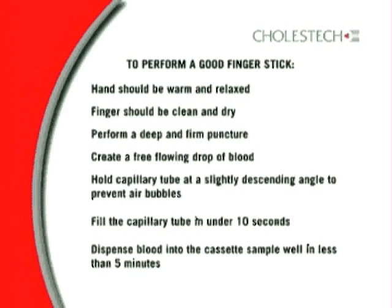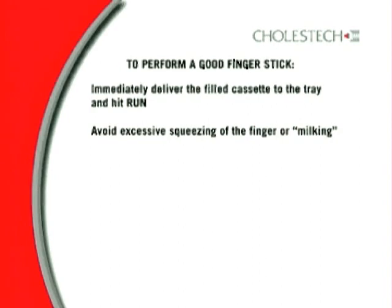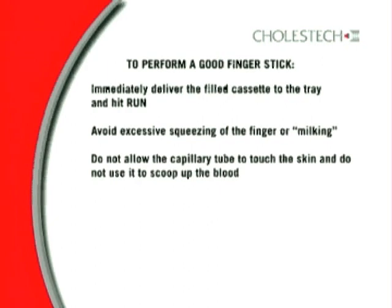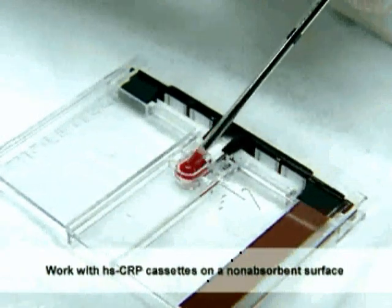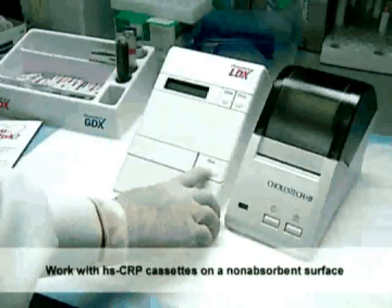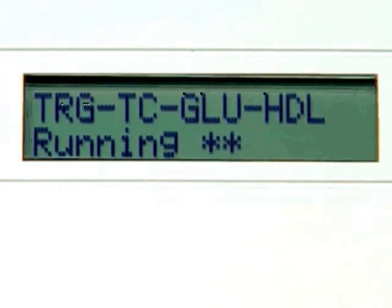Dispense blood into the cassette sample well in less than 5 minutes and immediately deliver the filled cassette to the tray and press Run. Avoid excessive squeezing or milking of the finger, as this may dilute the sample with tissue fluid and cause it to clot faster, leading to inaccurate results. Do not allow the capillary tube to touch the skin and do not use it to scoop up the blood. Avoid air bubbles in the tube — if there is air, you may not have enough sample and must start with a new capillary tube. Dispense the sample toward but not touching the white material in the cassette well. Hold the cassette horizontally and do not touch the black bar or the magnetic stripe. Press Run to close the drawer and start the test. Dispose of all supplies contaminated with blood in a biohazardous waste container.